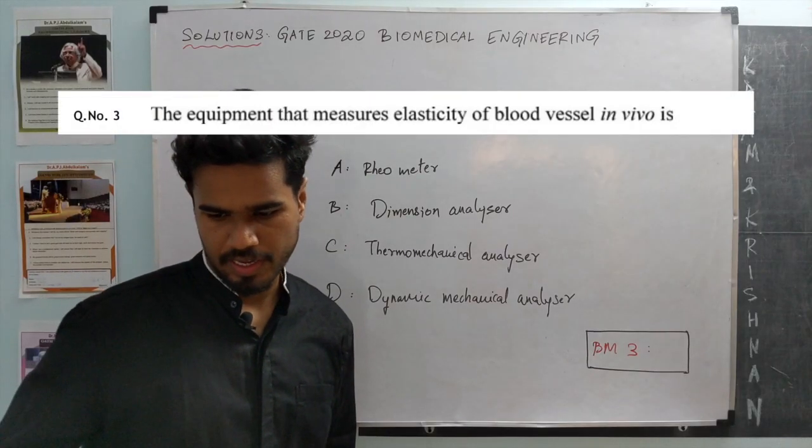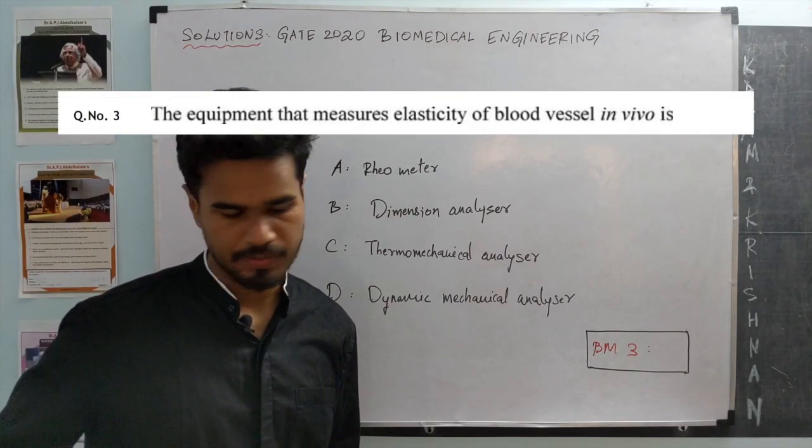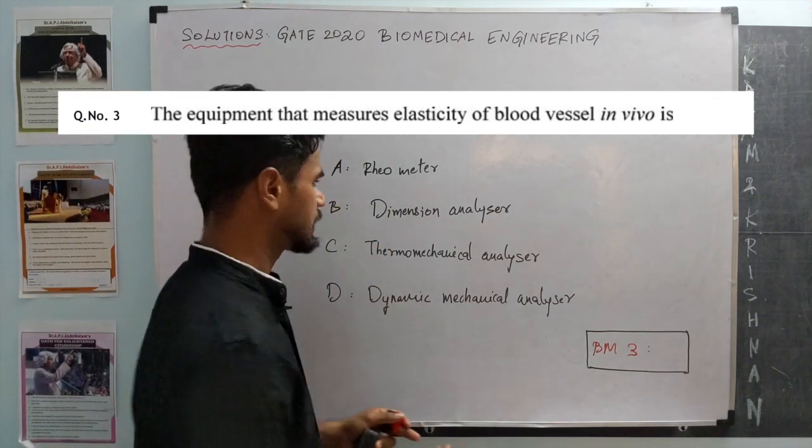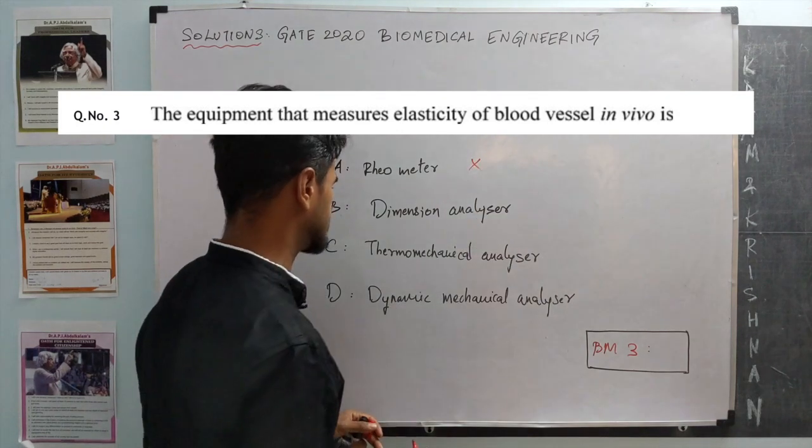The equipment that measures elasticity of blood vessels in vivo is... Rheometers are used to measure rheological properties, mostly ex vivo, so that is not the case.